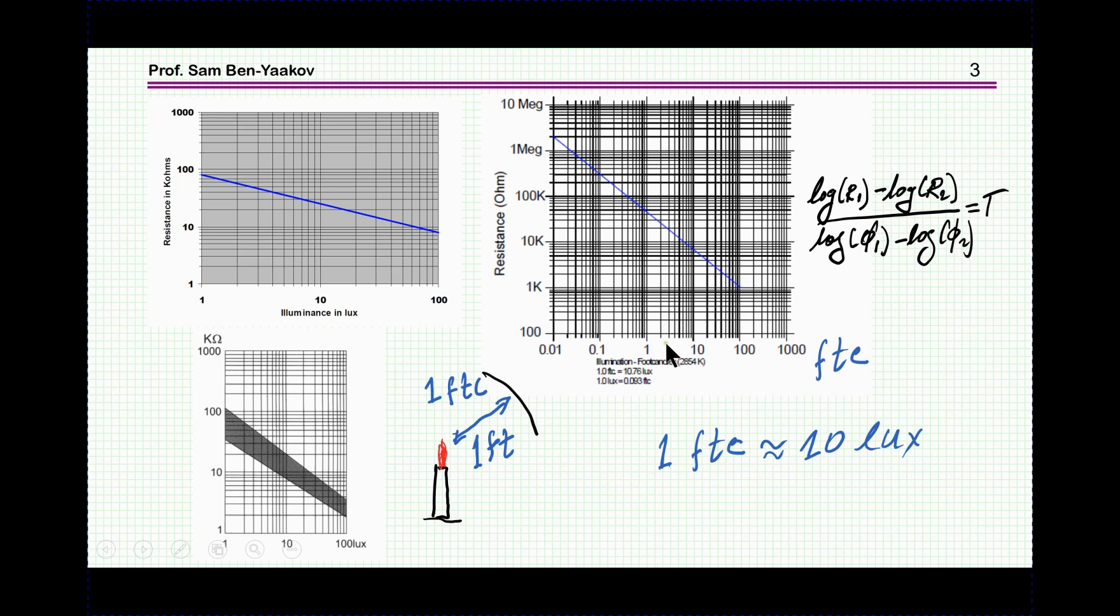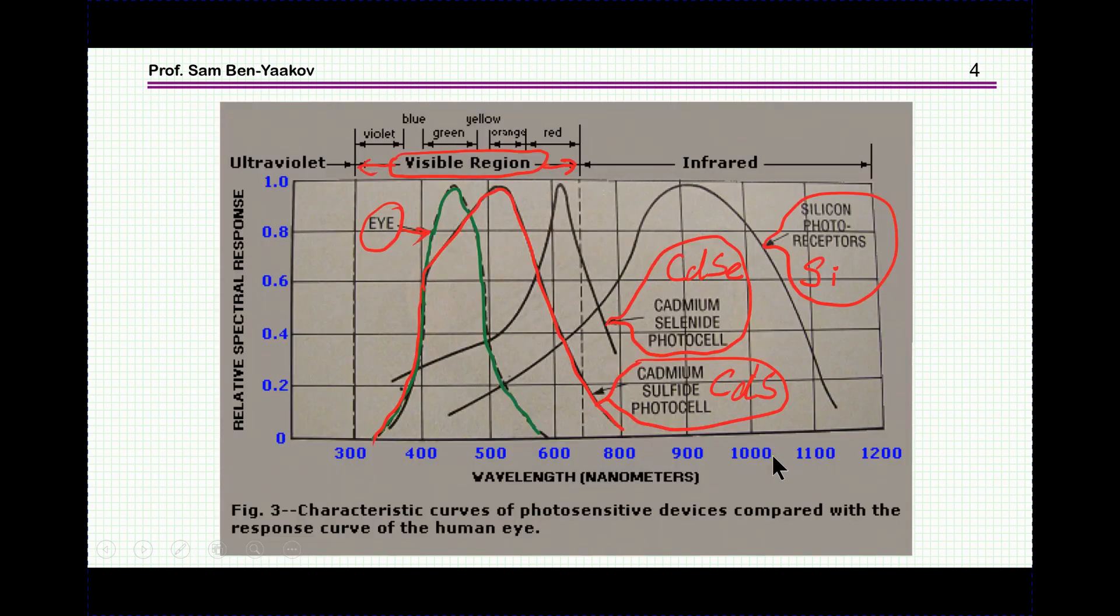Since it is a straight line in log-log, then if you take the difference between the resistances, you get a fixed slope that can be calculated by the difference in resistance divided by the difference in light density. This would be the slope of this line.